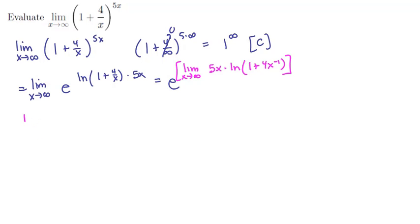Let's do some scratch work here. The limit as x tends to infinity of 5x times ln of 1 plus 4x to the minus 1. If we let x tend to infinity, we're going to have 5 times infinity, which is infinity, and then ln of 1 plus 4 times infinity to the minus 1. Now remember that infinity to the minus 1 is 1 over infinity, so that's just 0.